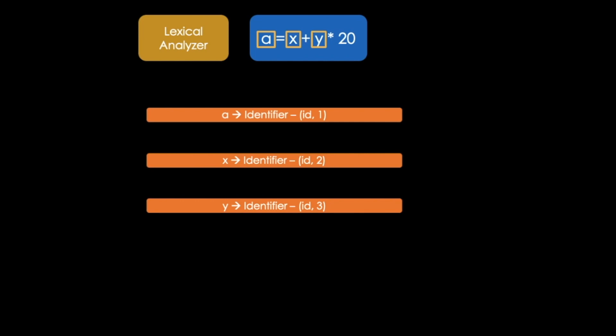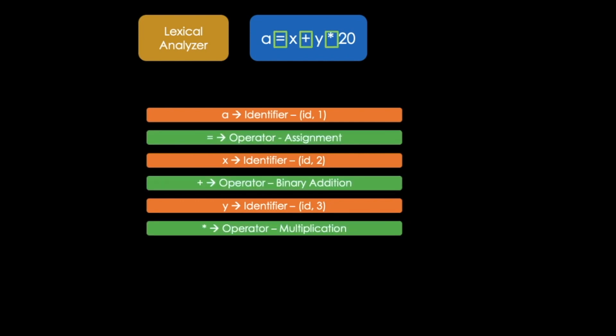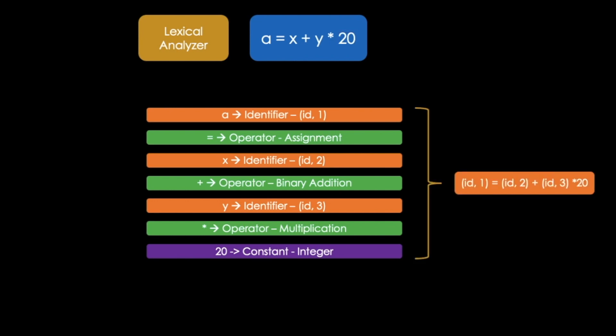Compiling starts with a lexical analyzer. It scans the code as a stream of characters and groups the sequence of characters into lexemes. It would detect our terms a, x, and y as identifiers, the equal plus a multiplication sign as operators, and 20 as an integer. Then, it outputs a sequence of tokens with reference to the programming language.